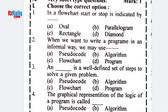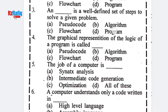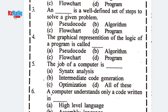Number two: if we want to write a program in an informal way, we may use pseudo code. Number three: an algorithm is a well-defined set of instructions to solve a given problem.